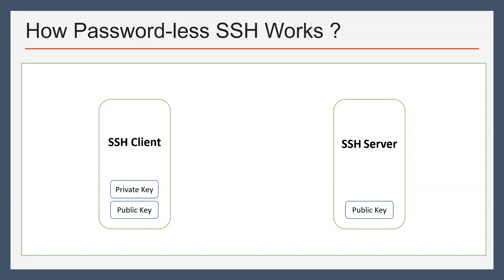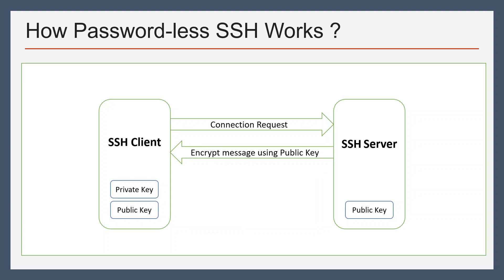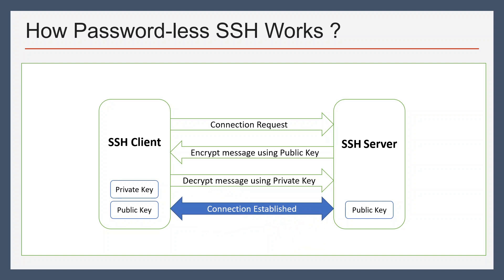Let us see how passwordless SSH works. We have two machines: one is SSH client and another is SSH server. On the client side we have two keys — private key and public key — and on the server side we have a public key. First the client sends a connection request to the server, then the server encrypts a message using the public key so that the client will use the private key to decrypt that message, and that is how the connection is established.